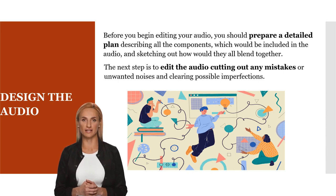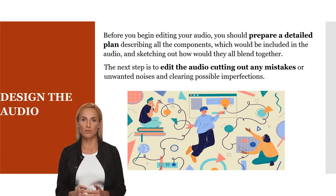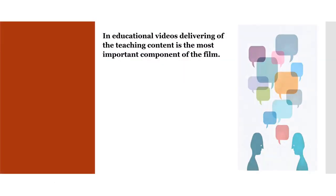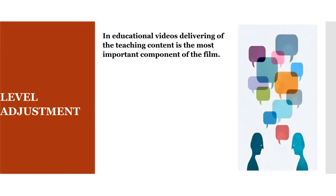The next step is to edit the audio by cutting out any mistakes or unwanted noises and clearing possible imperfections. As mentioned, the audio of a video recording can include several different sound sources — see unit 5.3, basic audio mixing and processing part 1. To achieve a balanced mix of all of them, you must adjust the volume levels of the individual audio tracks.